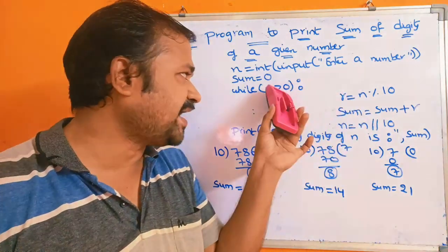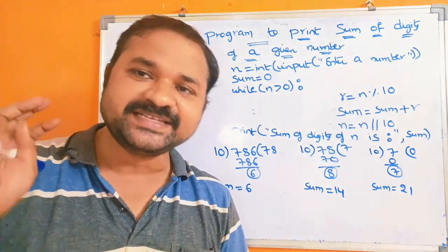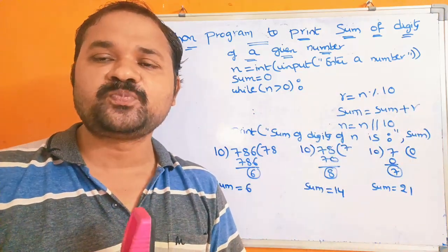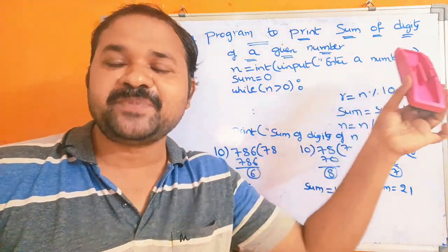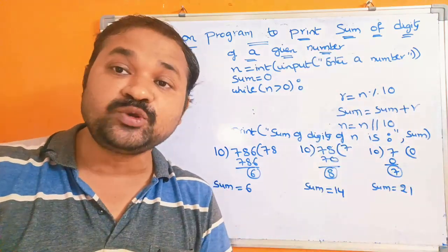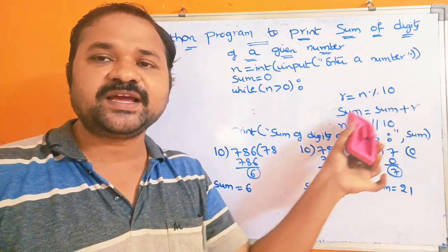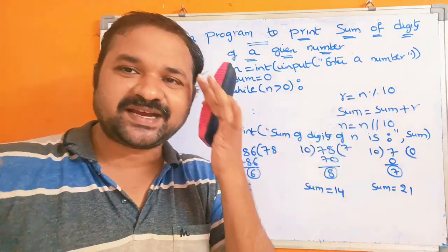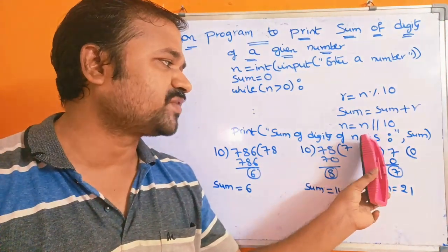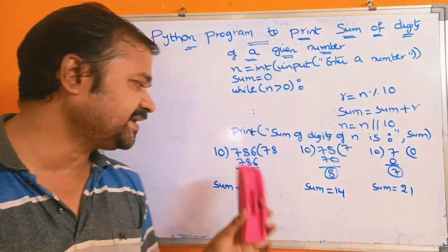The while loop will be repeated for the number of digits in that number. If the number contains three digits, the while loop will be repeated three times. If the number contains five digits, the while loop will be repeated five times. Whenever the condition is false, we display the sum value, since the resultant sum is available in the sum variable — print sum of digits of n is sum.